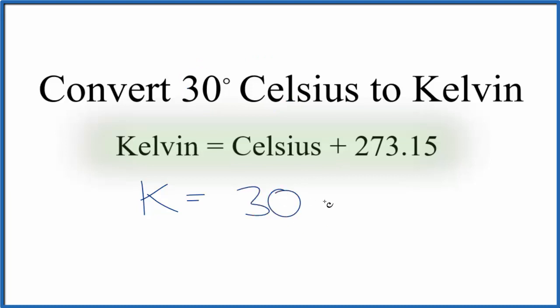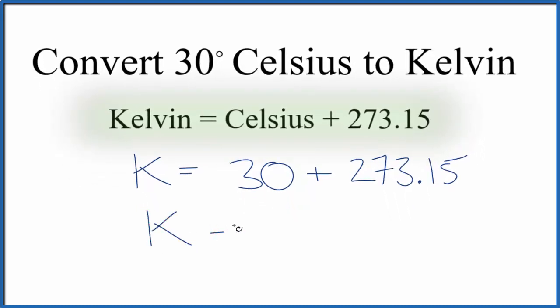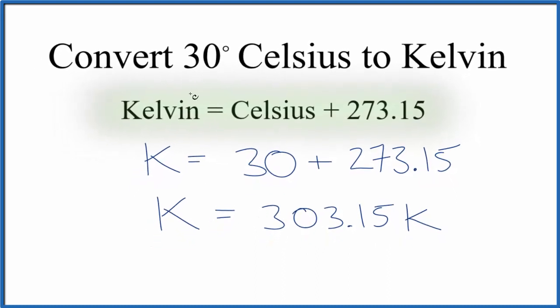We'll take that 30 degrees plus 273.15, add those together, and we get 303.15 Kelvin.